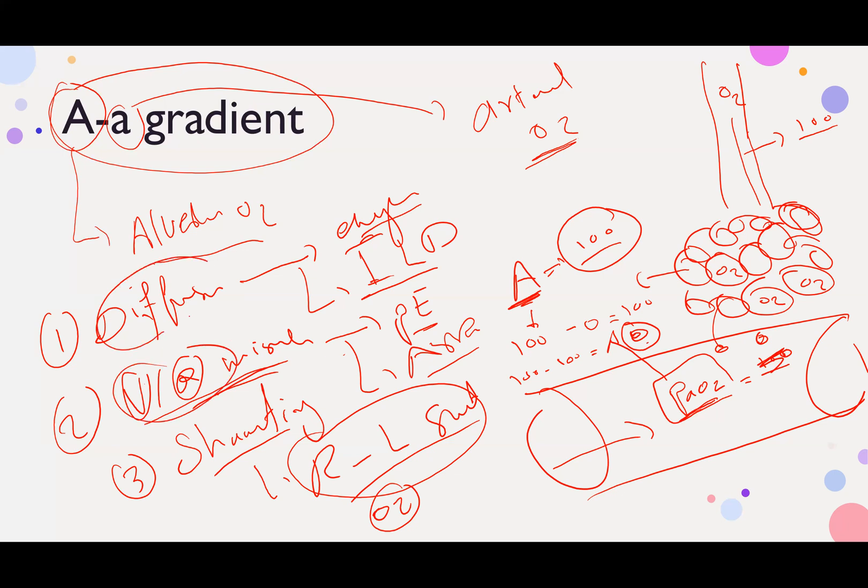With VQ mismatch and diffusion problem, they will improve a little bit with oxygen. This is one way to differentiate between shunting, right to left shunt, and VQ mismatch with diffusion defect.